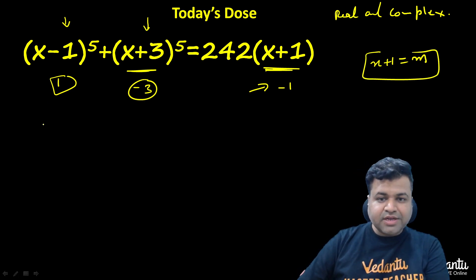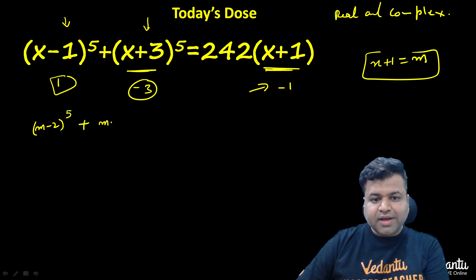So what we will get: x-1 will become (m-2)^5, and x+3 will become (m+2)^5. That is equal to 242 times, and x+1 is nothing but your m, right?